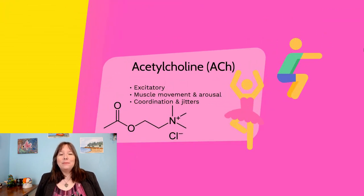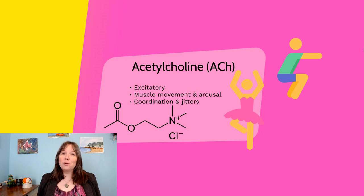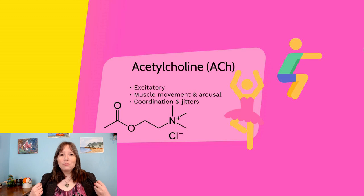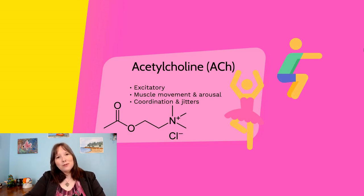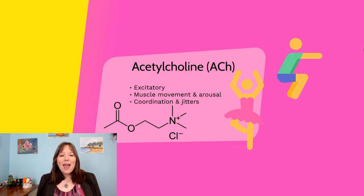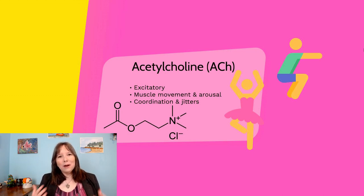Then we have some that are very different from mood — think about just our motor system. We have acetylcholine, often called ACh. This is an excitatory neurotransmitter involved in muscle movement and arousal of our system. If you think about moving your arms or legs, you're going to see acetylcholine — it's the neurotransmitter going between your motor neurons. This helps with coordination. If you are low on acetylcholine, you might find you're a bit more jittery or shaky.